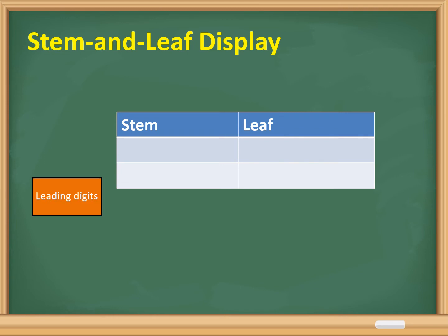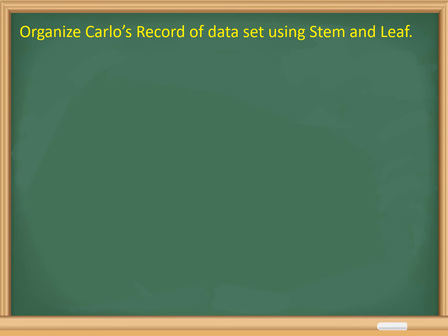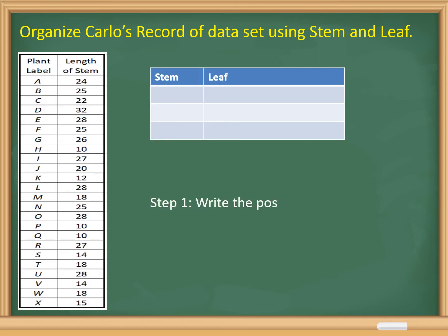In this display, we have the leading digits, which are also the stem values, and the trailing digits, which are the leaf values. To organize a data set using the stem and leaf method: Step 1, rewrite the possible leading digits under stem. The given data set here is the length of stems. By inspection, we have 1, 2, and 3, because the lengths are more than 10, more than 20, and more than 30. That is why the stem or leading digits are 1, 2, and 3.